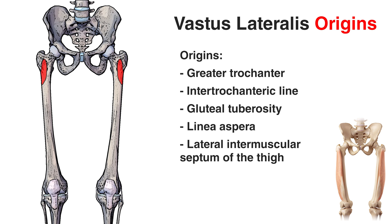Moving on to the vastus lateralis origins, the origins on the anterior of the femur are highlighted in red and wrap around to the posterior of the femur as well. Starting on the front, the first origin point is the greater trochanter — the bony prominence at the proximal, lateral end of the femur. Another bony landmark is the lesser trochanter, and between the greater and lesser trochanter there is a ridge running between them, visible on the red-marked origin section.